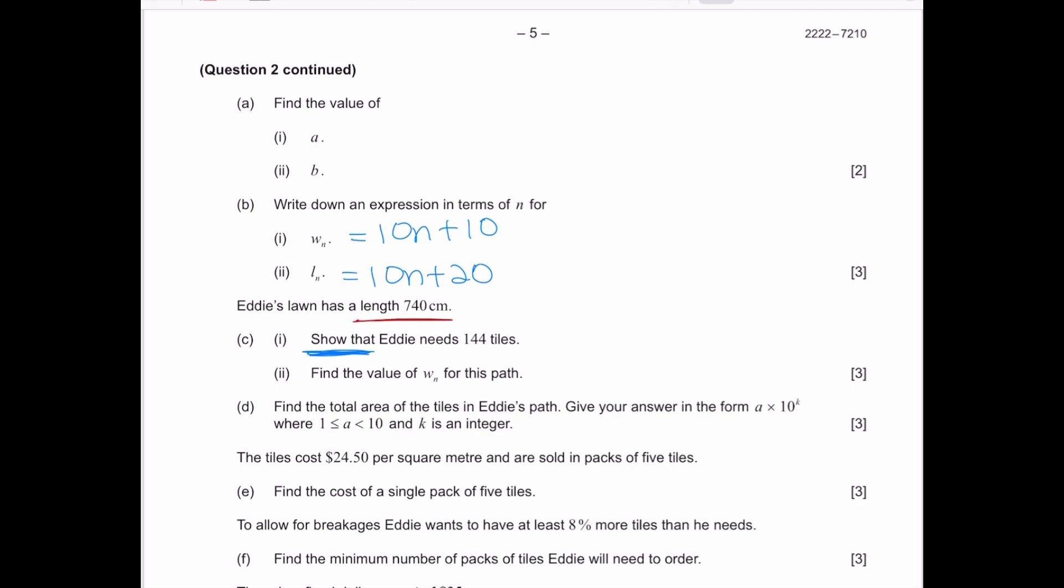It's given that he has a length of 740 centimeters. So we are going to say 740 centimeters is equal to 10n plus 20. If I take away 20 from both sides, I have 720 is equal to 10n, and if I divide by 10, I'm going to get 72. But if you remember, this means that you need 72 pairs of tiles, and 72 times 2 is equal to 144 tiles.